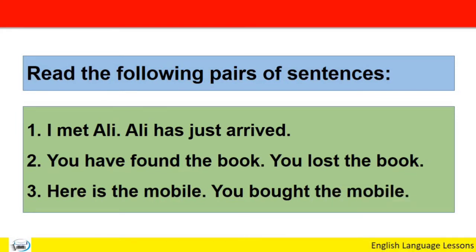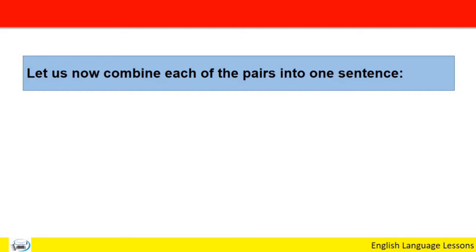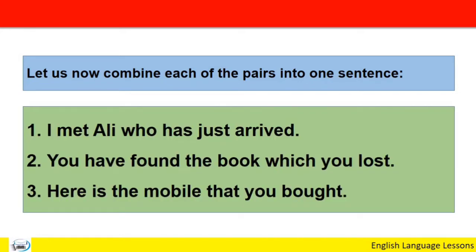ان sentences کے pairs پہ غور کرتے ہیں۔ 'I met Ali. Ali has just arrived.' 'You have found the book. You lost the book.' 'Here is the mobile. You bought the mobile.' اب ہم ان peers کو ایک ایک sentence میں combine کرتے ہیں: 'I met Ali who has just arrived.' 'You have found the book which you lost.' 'Here is the mobile that you bought.'